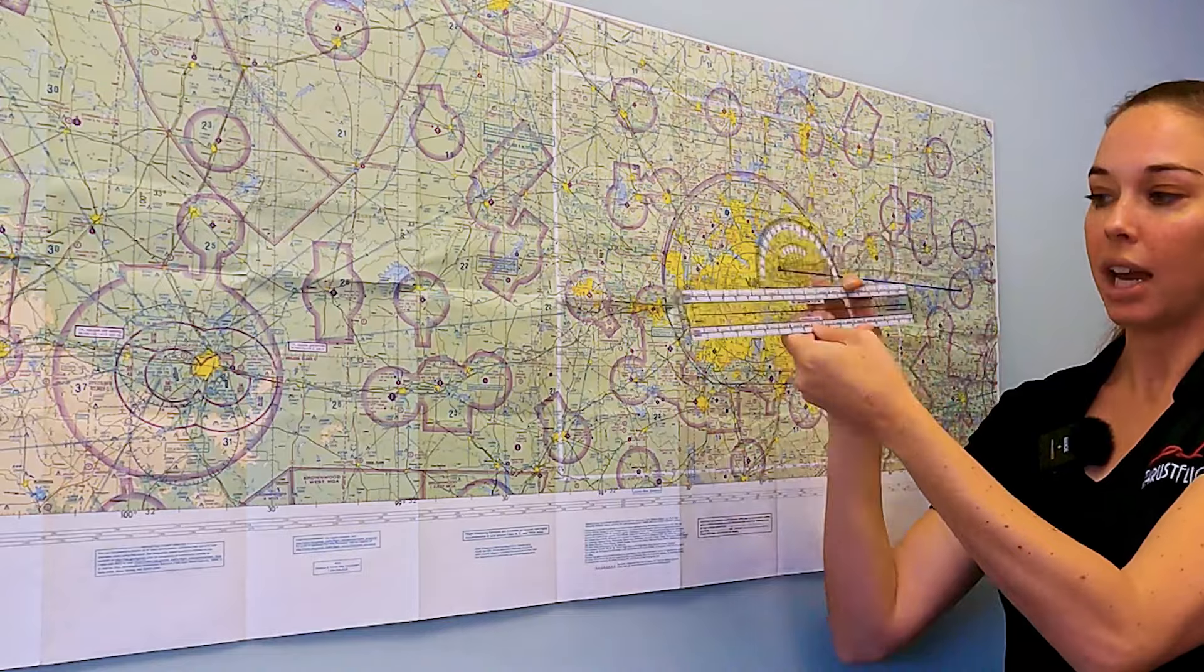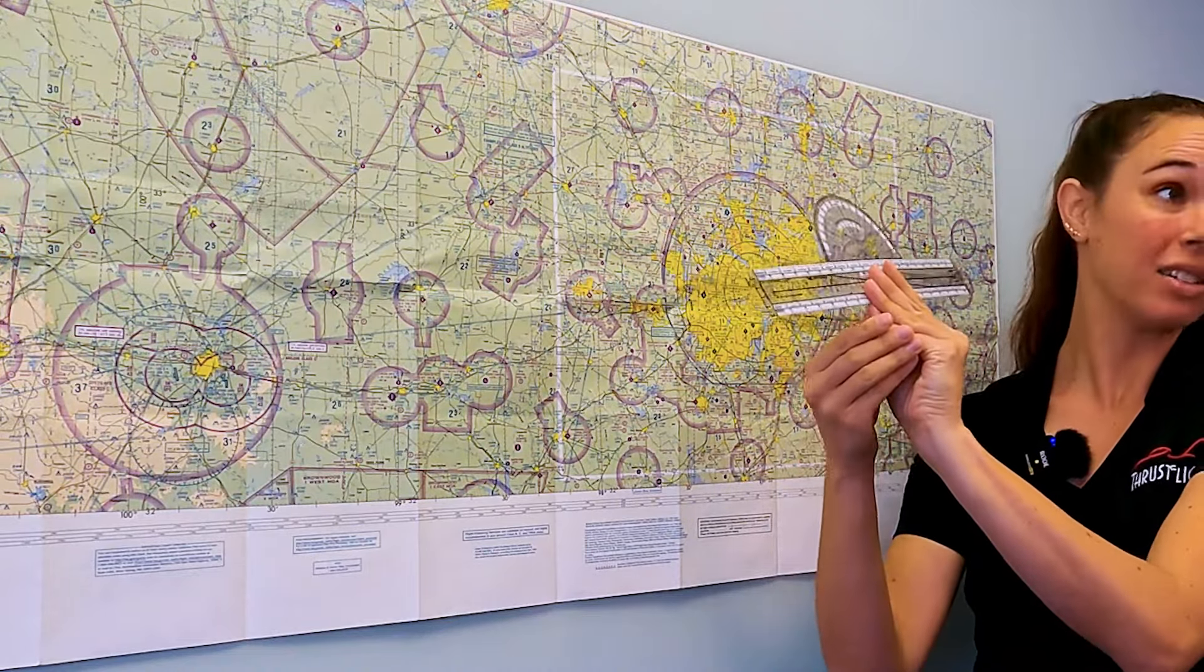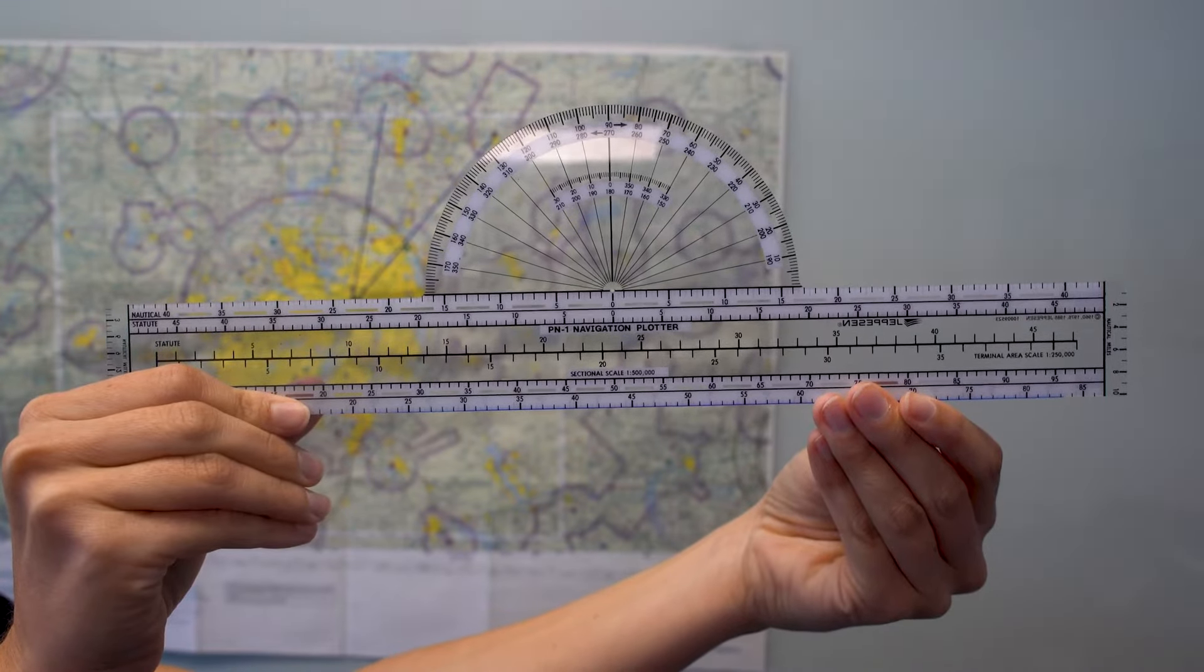If I flip this over, it says it's a WAC scale. Basically, it's the world area chart scale, which is one to one million. And I want it one to 500,000 instead. So I'd be measuring the wrong amount of miles. Some plotters also have a TAC scale, which is the terminal area chart. Again, totally different scale or conversion. So make sure it's on the sectional side.